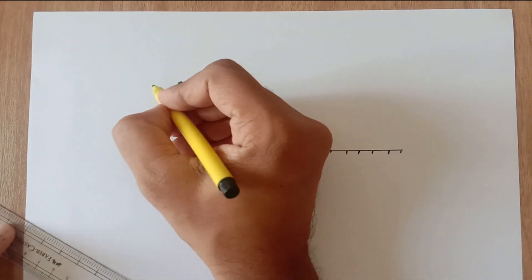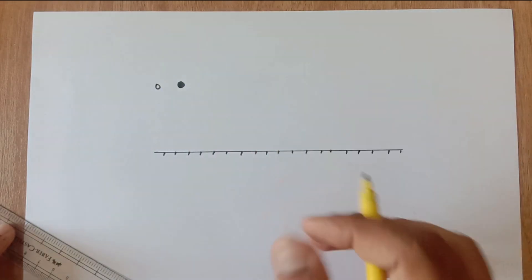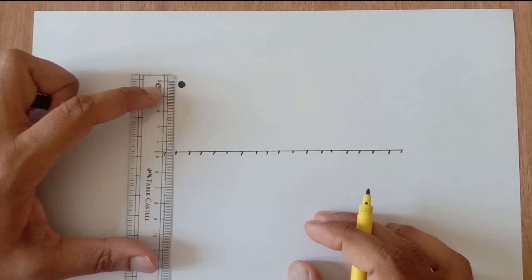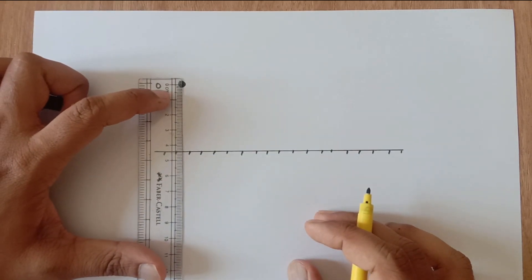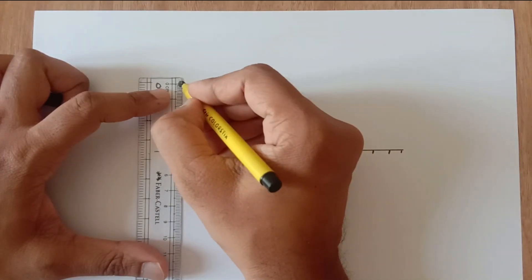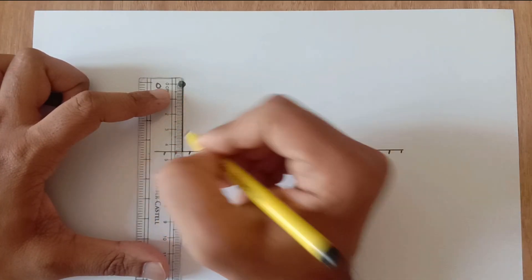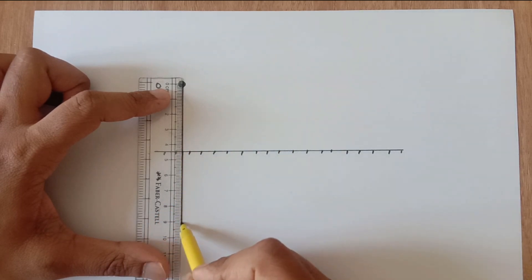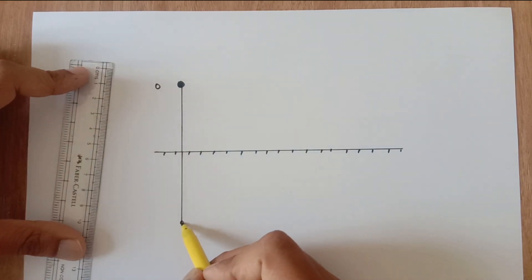Now I am going to draw a perpendicular line from the object to the mirror and that is the object distance. It is roughly 4.5 cm. Now at the same distance behind the mirror, that is 4.5 cm behind the mirror, draw the image.